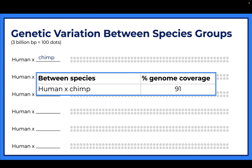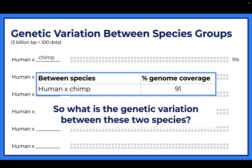We're going to fill out what the variation is - what's different between humans and chimps, what varies. The genetic variation between these two species would be 9%, so write 9% on the right side.